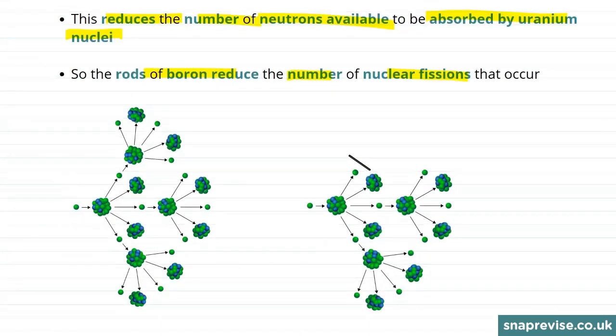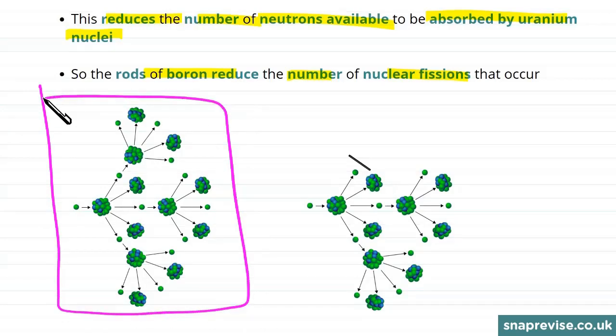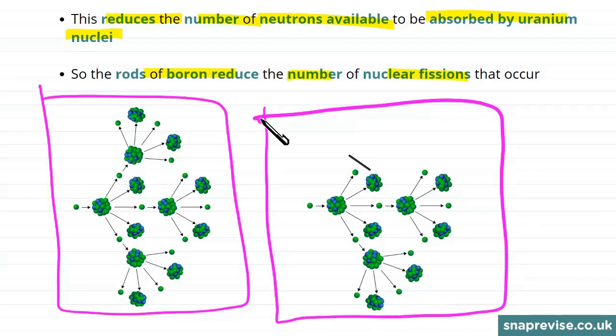Without the boron rod we have the situation on the left where one reaction causes another three reactions. On the diagram on the left we see what happens if we put a boron rod in and it absorbs one of the neutrons. Then the first reaction only causes two more.